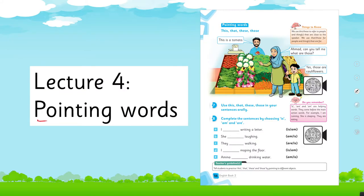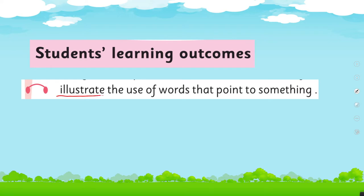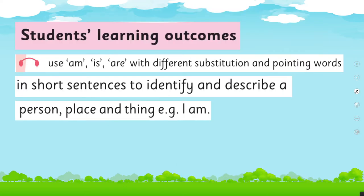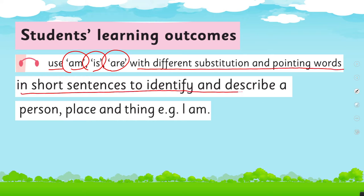In Lecture 4, we'll learn about pointing words and cover the SLO to illustrate the use of words that point to something. In Lecture 5, under Grammar, we'll learn the use of 'is,' 'am,' and 'are,' and cover the SLO to use am/is/are with different substitution and pointing words in short sentences.